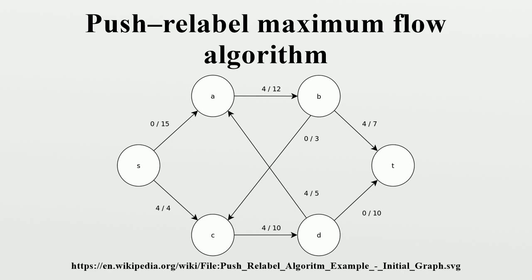The algorithm starts by creating a residual graph, initializing the preflow values to zero, and performing a set of saturating push operations on residual edges exiting the source. Similarly, the label heights are initialized such that the height at the source equals the number of vertices in the graph (H equals |V|), and all other vertices are given the height of zero.